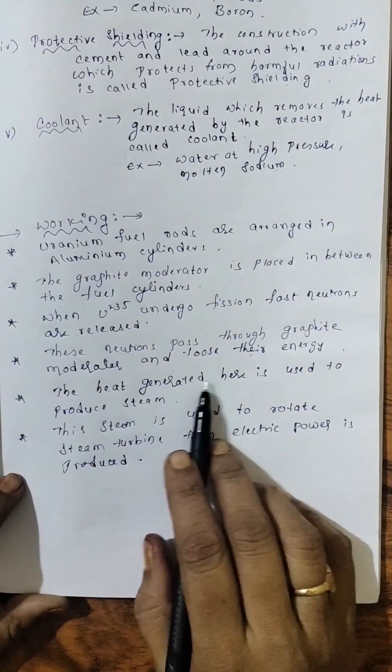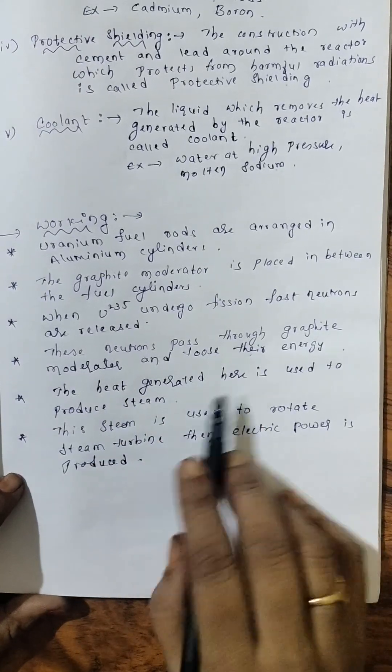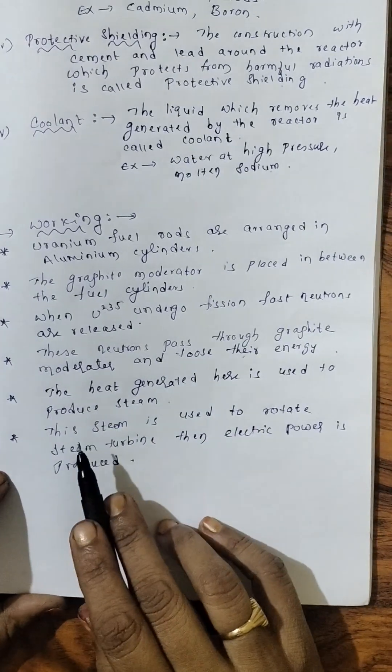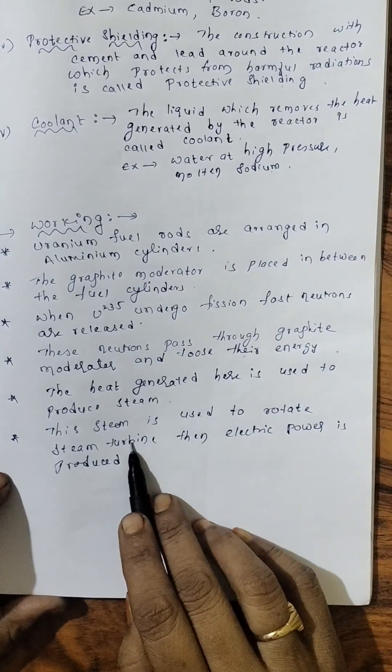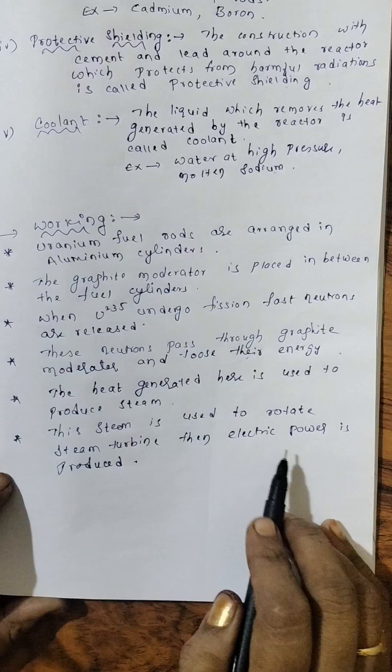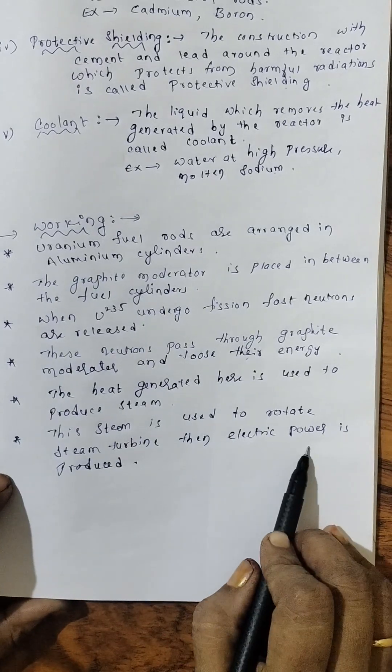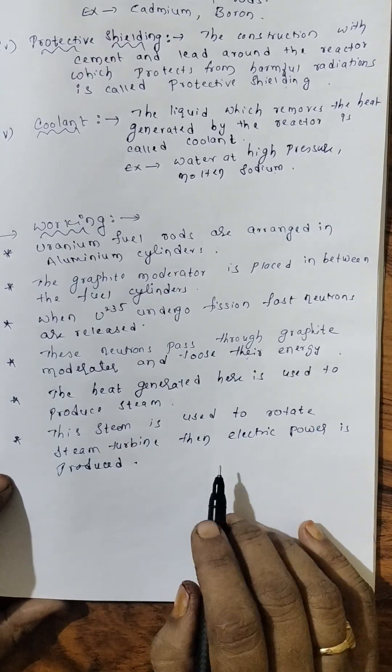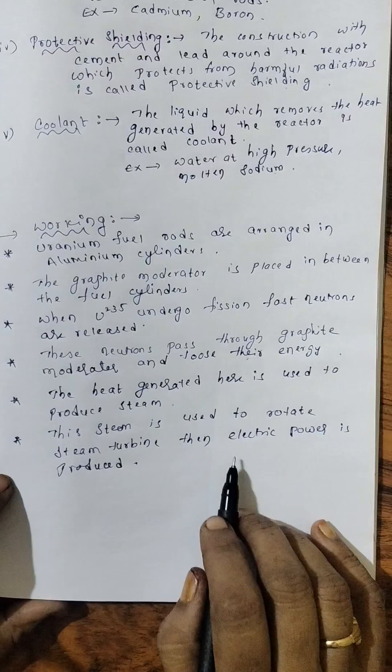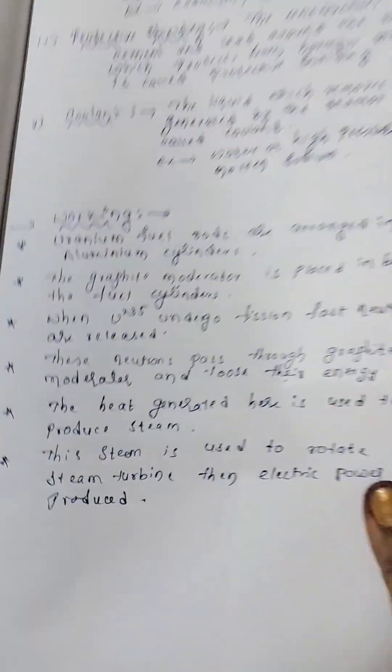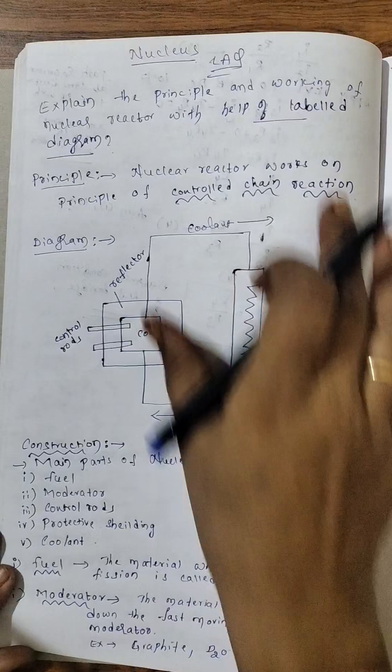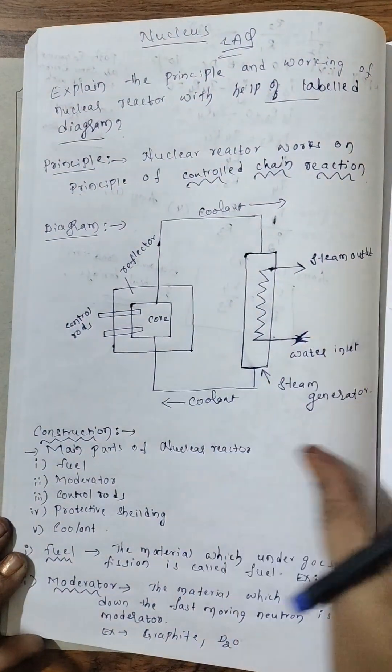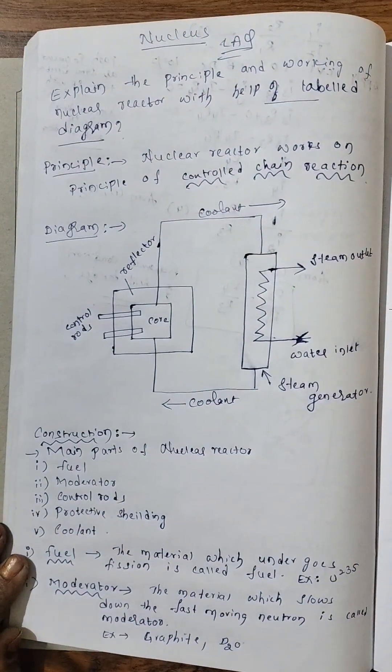Now, the heat generated during this process produces steam. And this steam is used to rotate the turbines. And thereby produces electric power. In such a way, nuclear electricity is produced by controlled chain reaction.